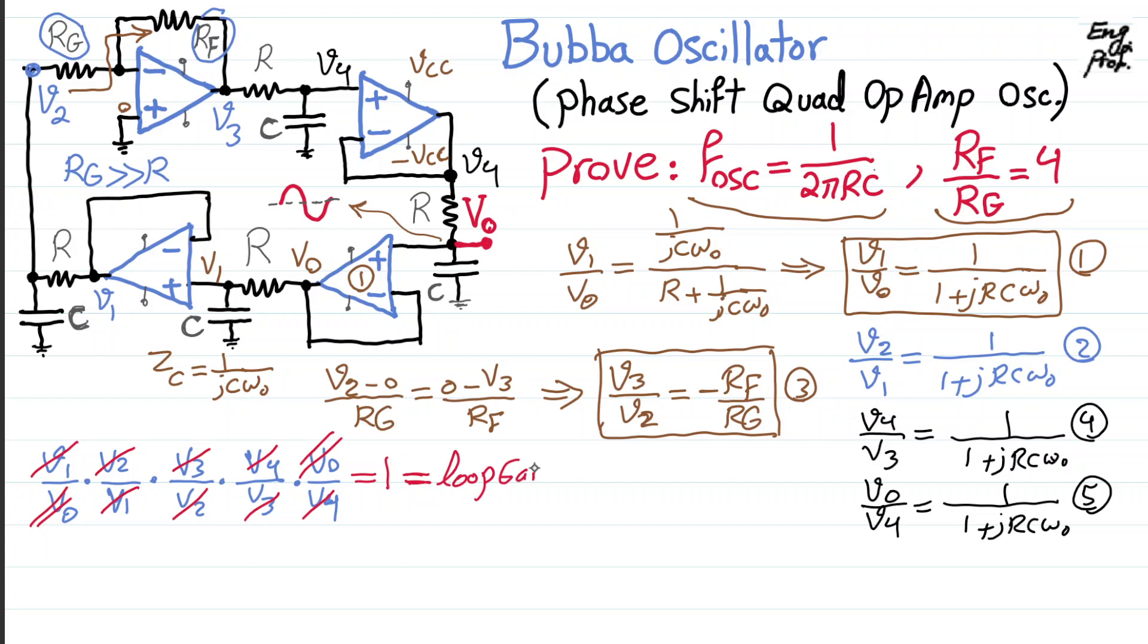And on the right-hand side of this whole thing, we have negative R_F over R_G, and then times, now you can see that we have four similar components, and it would be 1 over 1 plus jRCω to the power ω naught. All of these are ω naught at the frequency of oscillation, so to the power 4. So now this is the final equation that we need to satisfy.